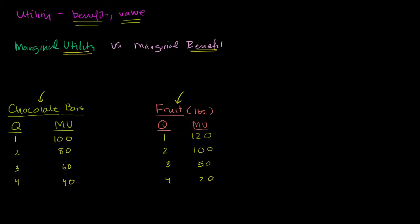To see what total utility is: if I were to have two pounds of fruit, I would get a hundred twenty of utility from that first pound, and a hundred from the second pound. So I'd have a total utility of two hundred and twenty utility units from both pounds.